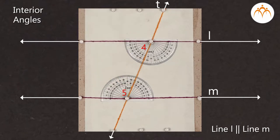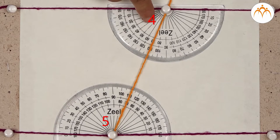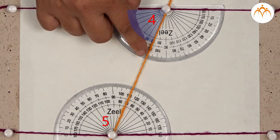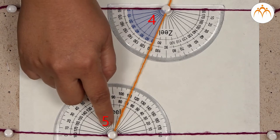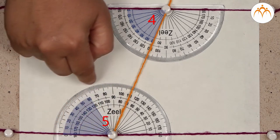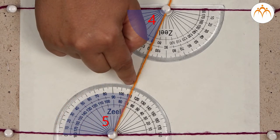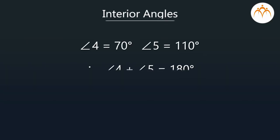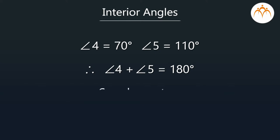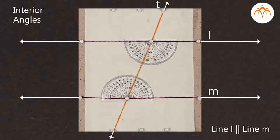If we measure angle 4, it is 70 degrees and angle 5 is 110 degrees. If we add their measures, it is equal to 180 degrees. That means these interior angles are also supplementary.